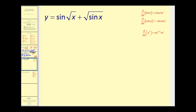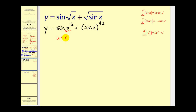We know from previous examples that we don't find derivatives when things are in radical form, so let's rewrite this using rational exponents. Both of these are composite functions. In the first term, we should think of u sub 1 as x to the 1/2 power. On the second term, u sub 2 equals sine x. So this would be u to the 1/2 and this would be sine u. We'll need to find the derivatives of both u's.